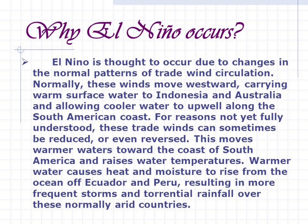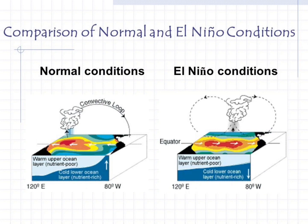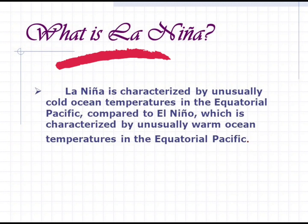Normally, trade winds move westward, carrying warm surface water to Indonesia and Australia and allowing cooler water to upwell along the South American coast. For reasons not yet fully understood, these trade winds can sometimes be reduced or even reversed. This moves warmer waters toward the coast of South America and raises water temperatures. Warmer water causes heat and moisture to rise from the ocean off Ecuador and Peru, resulting in more frequent storms and torrential rainfall over these normally arid countries.